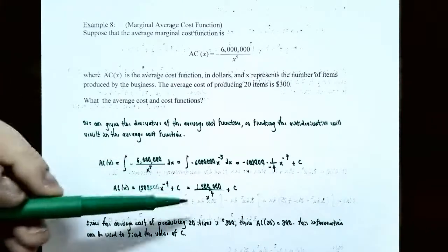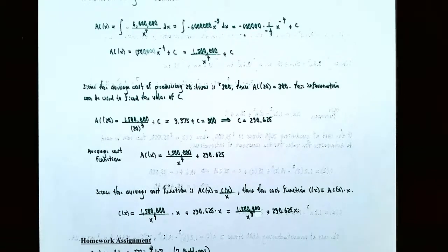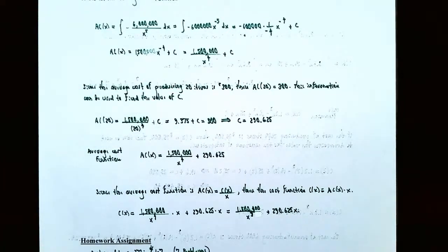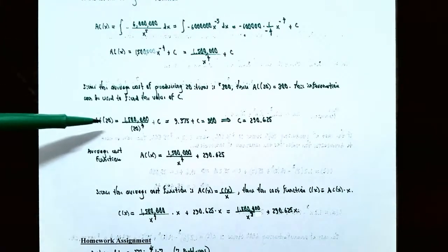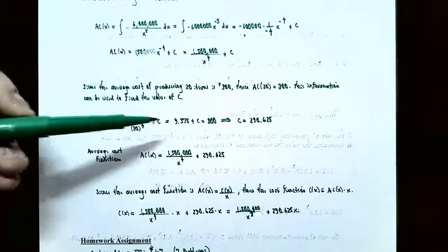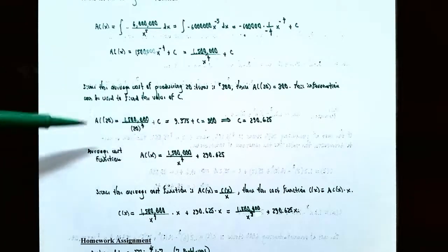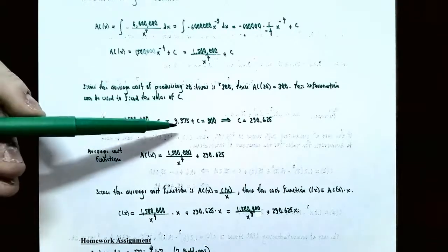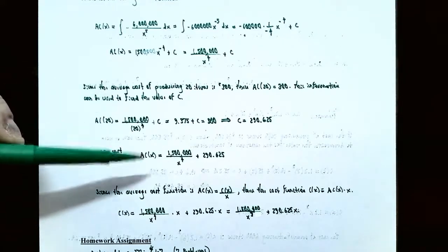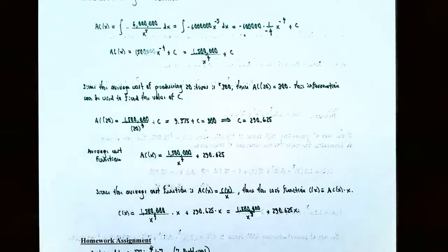We know the average cost function will be of the form AC(x) = 1,500,000 / x⁴ + C. We can find the value of C using the information that the average cost of producing 20 items is $300. Replacing all x's with 20: AC(20) = 1,500,000 / 20⁴ + C = 300. This gives 9.375 + C = 300, so subtracting 9.375 gives C = 290.625. The particular average cost function is AC(x) = 1,500,000 / x⁴ + 290.625.